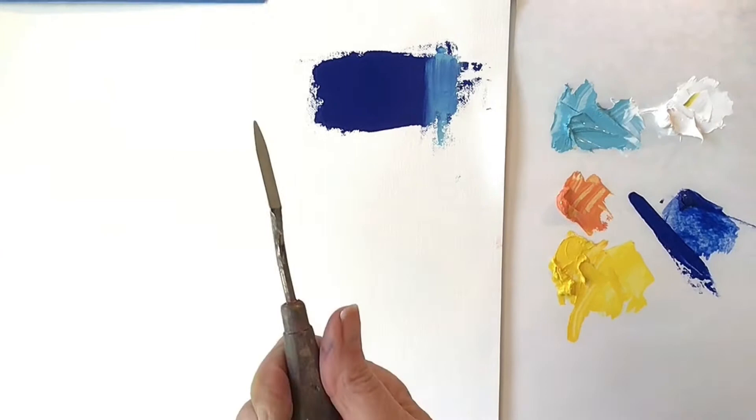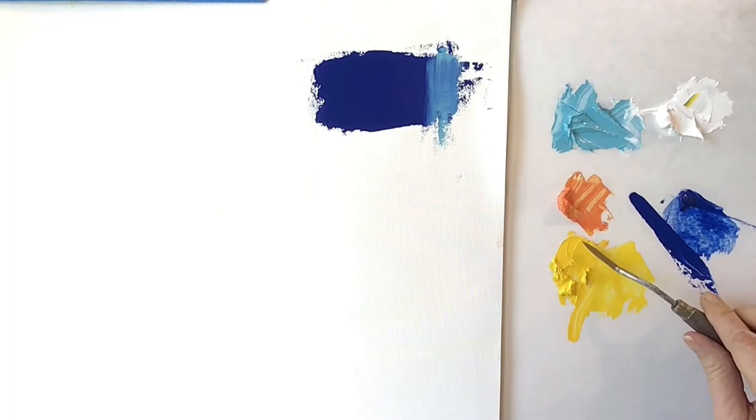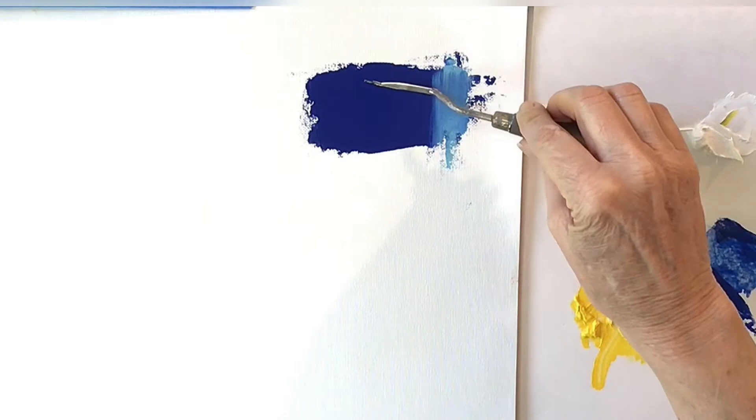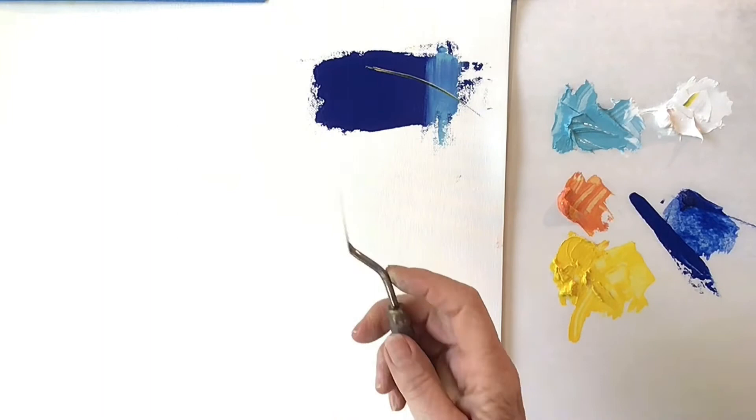I really like this palette knife for creating line work and I will show you my technique. Before picking up the color for the line work, you want to smooth the paint against your palette, pick up a small amount along the edge, and lightly glide it through the paint.